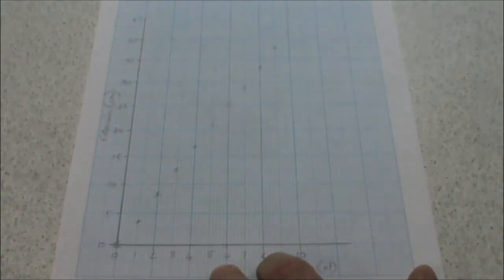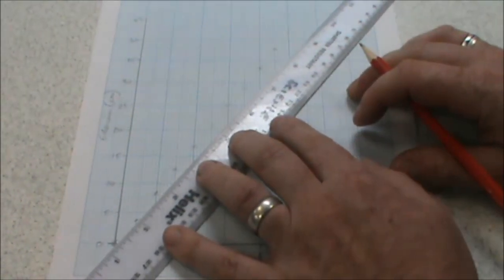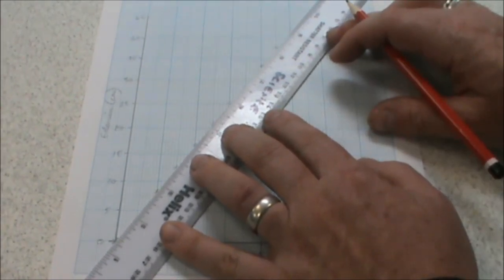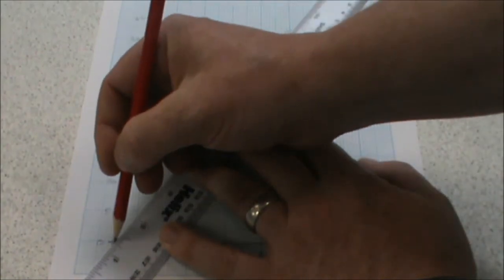Now we've got our points plotted. We can draw our line of best fit. And there should be a straight line going through 0, 0, provided we haven't exceeded the limit of proportionality.